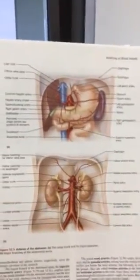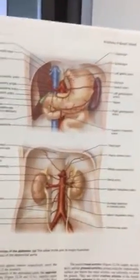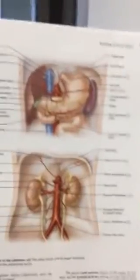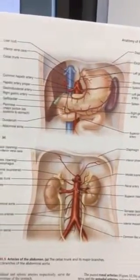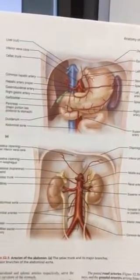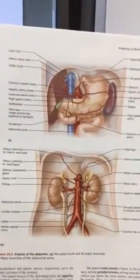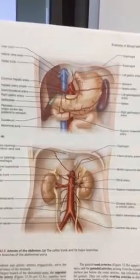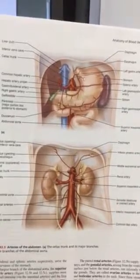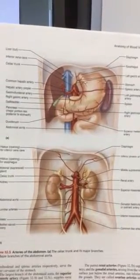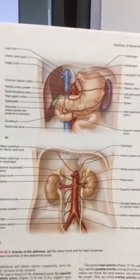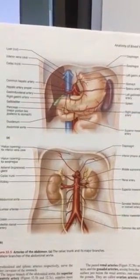When I first introduce these vessels, I like to just show them to you in order of how they branch. I think that's the easiest way to remember them — just learn them in the order that they branch off of the descending aorta in the abdominal cavity.